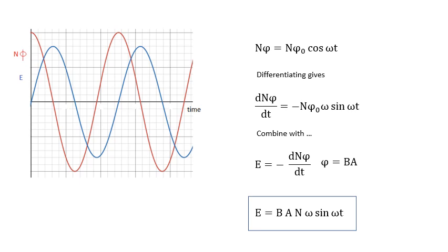So, looking at this, NΦ is NΦ₀ cos ωt. All we're saying is that the flux linkage varies sinusoidally. If you differentiate that, we get dNΦ/dt is minus NΦ₀ω sin ωt. And if you combine that with Faraday's law, and don't forget this minus sign. I haven't talked about this minus sign. We'll talk about that when we do Lenz's law in a minute. And Φ equals BA, we get the EMF is BANω sin ωt. The maximum EMF will be when sin ωt equals 1. So, the maximum EMF will be BANω.